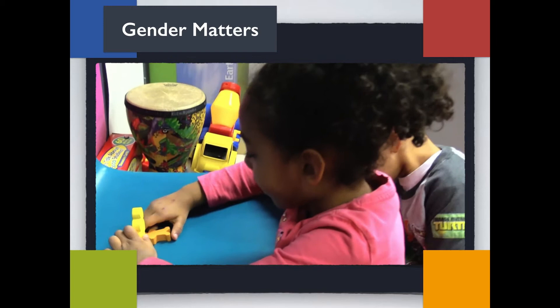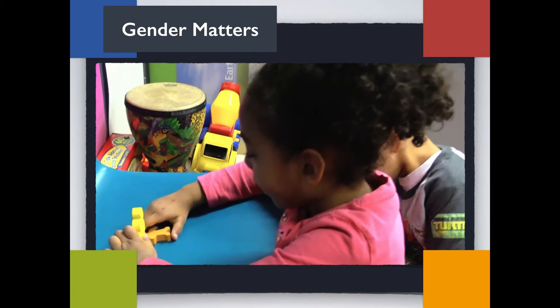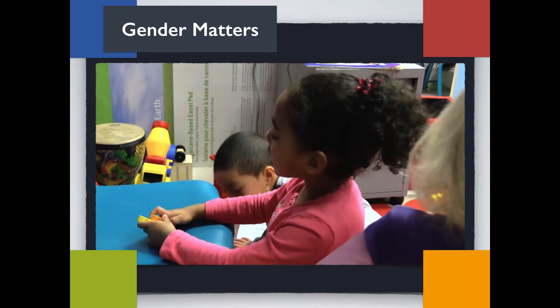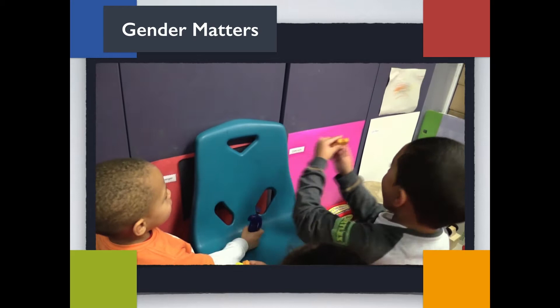Leonard Sax's research helps educators look closely at the fundamental differences between girls and boys. Their brains are different, their childhood development is different, and their perceptions of the world around them are different. Let's take a closer look at how we can positively affect children's social and educational interactions.